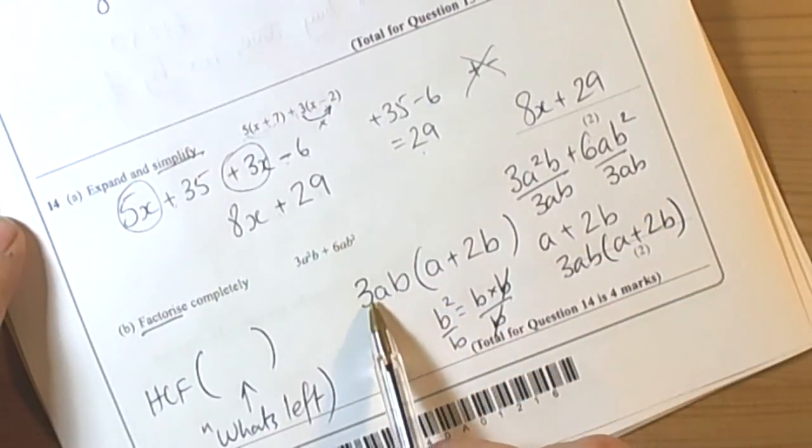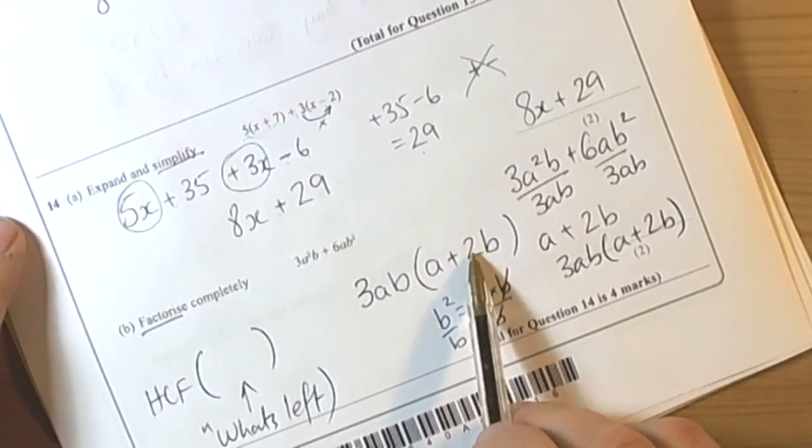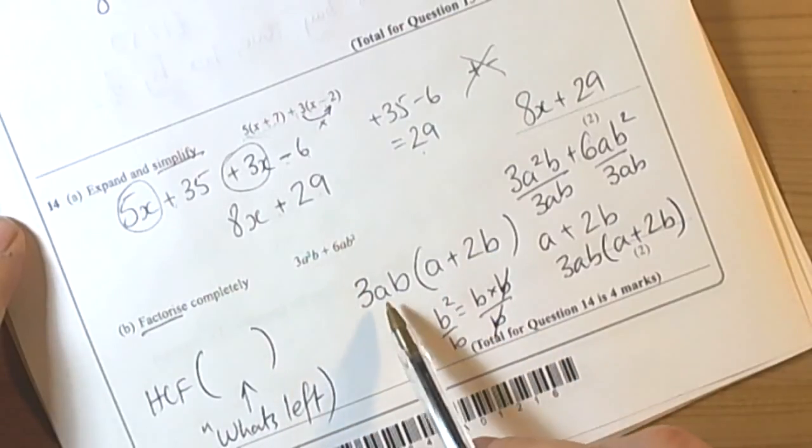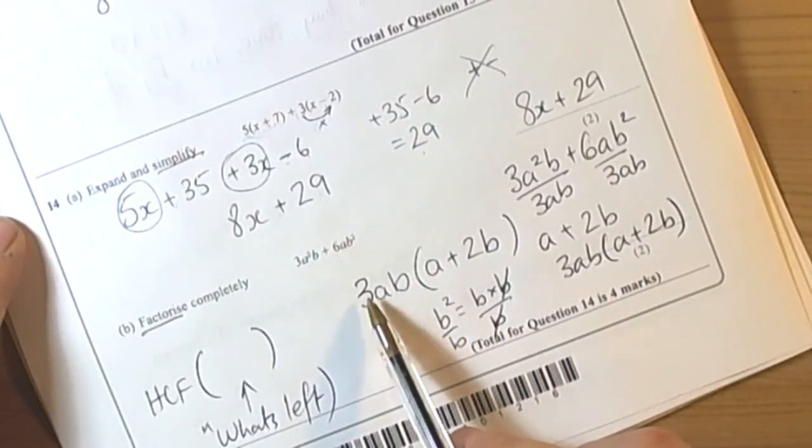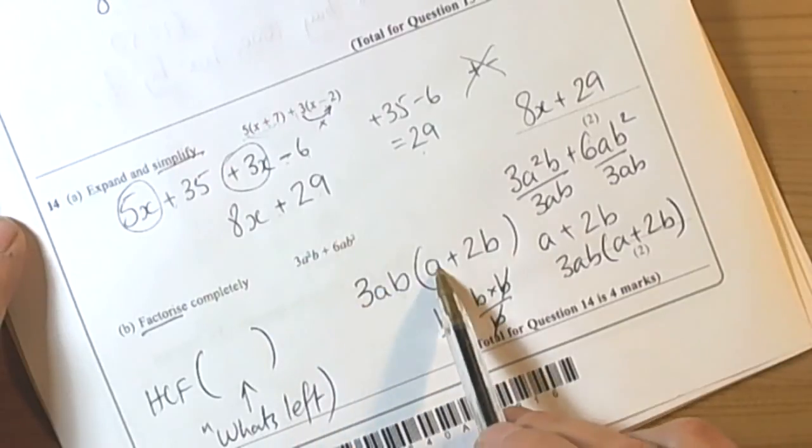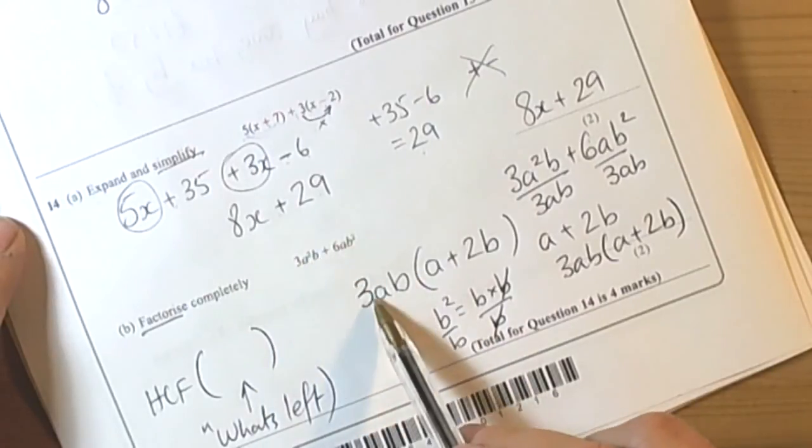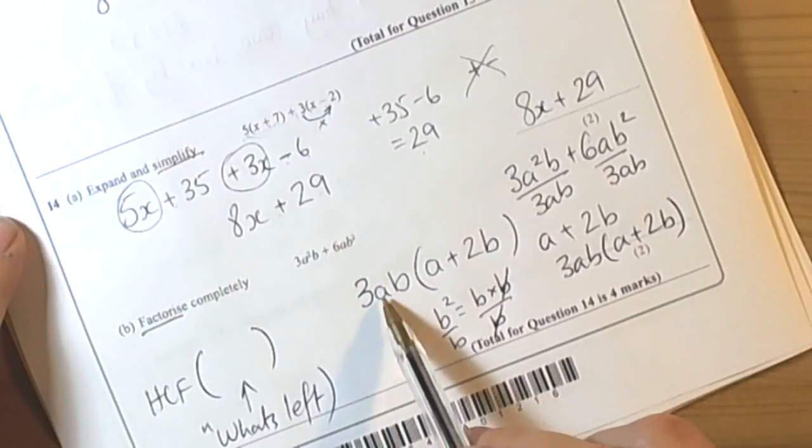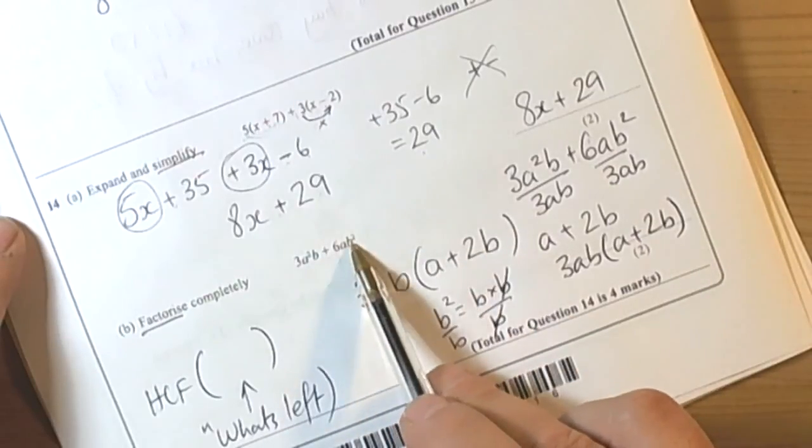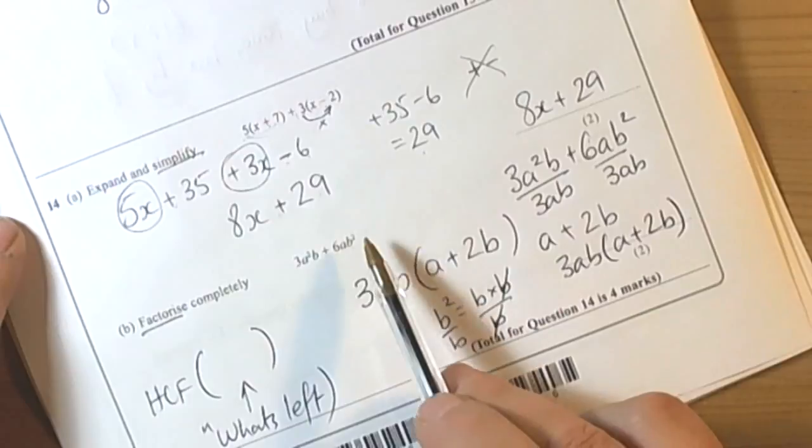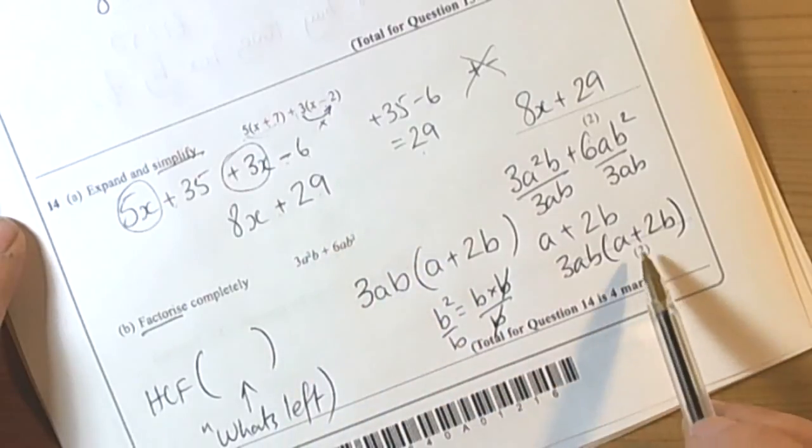We check of course, we multiply out to make sure that it did give us our original expression. So we've got 3ab times a, well the 3 is there, a times a is a² and the b is there. 3 times 2 is 6, a times b is ab but we've got a b as well, so b times b is b². So that works.